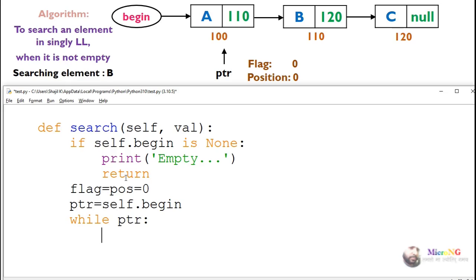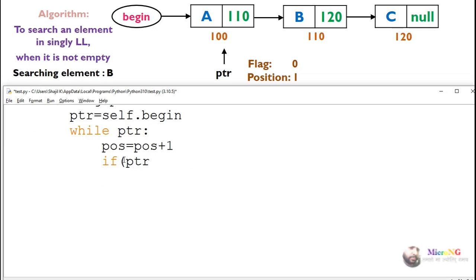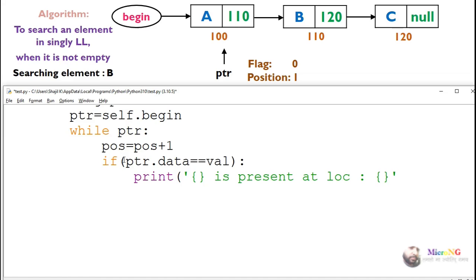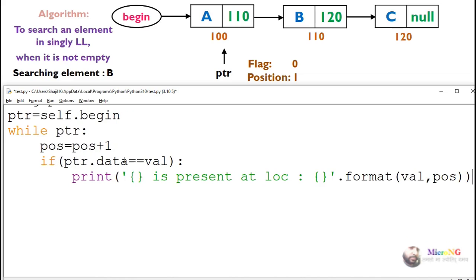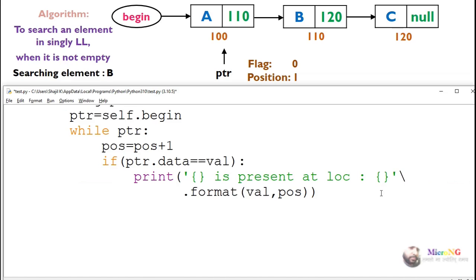As long as PTR is a valid pointer, first we increase the position by 1 because it's pointing to a valid node. Then we check whether the data at PTR equals the value we are searching for. If PTR.data equals val, we display that the data is present at that position. Then we make flag as 1 to indicate the data is present, and then move the pointer to the next node.